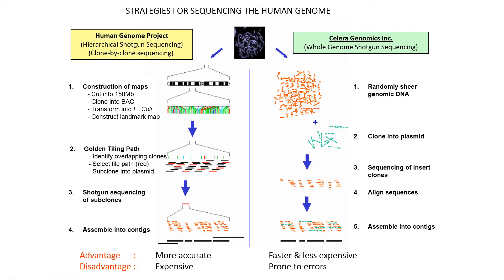The advantage of the hierarchical approach is that sequencers are less likely to make mistakes when assembling shotgun fragments into contigs as long as full chromosomes, because the chromosomal location for each BAC is known and there are fewer random pieces to assemble. The disadvantage is time and expense. The whole genome shotgun method used by Celera Genomics is faster and less expensive, but it is more prone to errors due to incorrect assembly and also required tremendous computational power.